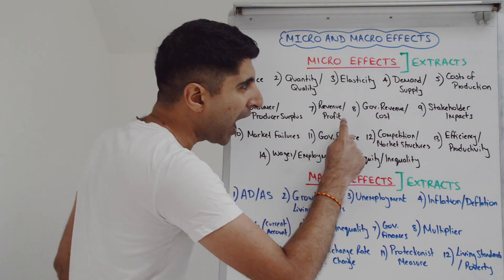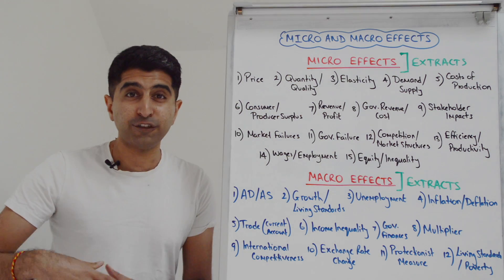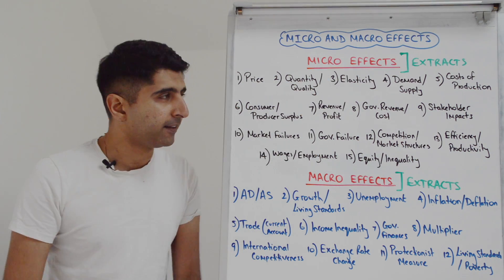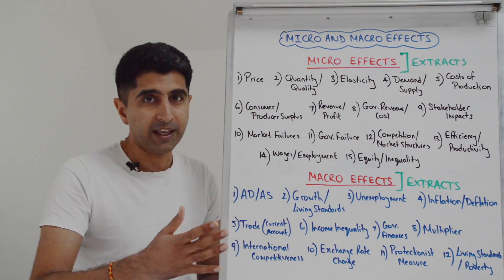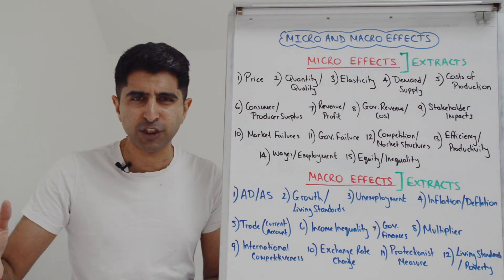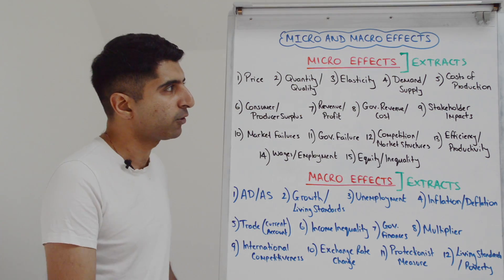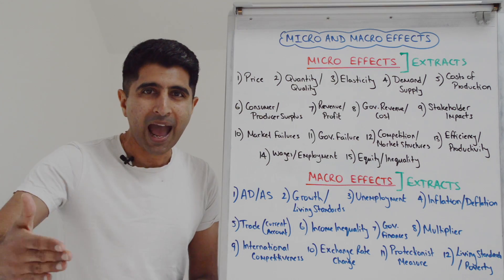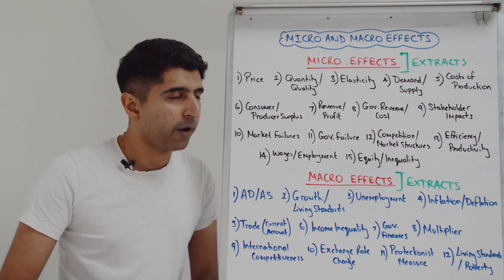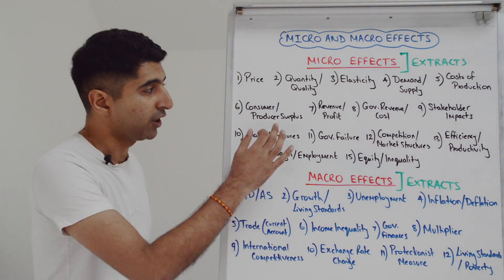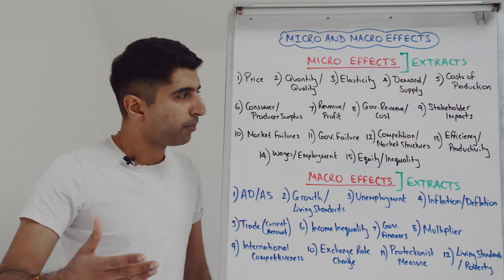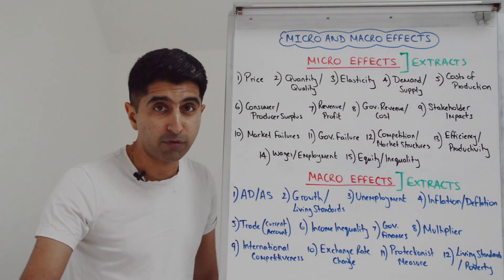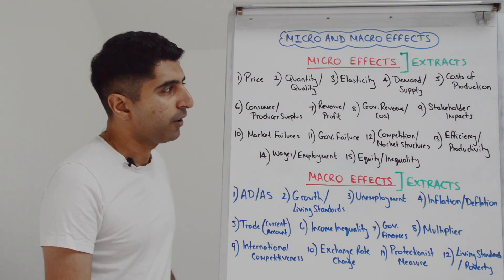Have a look at this list. The first nine are simply market effects — you can derive these from your basic study of demand and supply. Any change in price or quantity from a basic demand or supply shift on a diagram is a micro effect. Any change in elasticity, any factor that shifts the demand or supply curve, any change in a firm's cost of production, any change in consumer or producer surplus, any change in firm revenue, firm profit, government revenue, or cost to the government are clear micro effects.